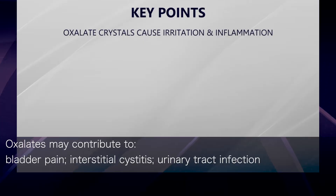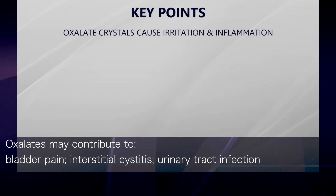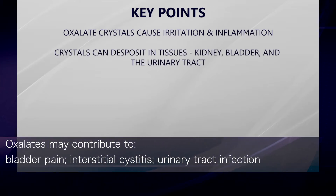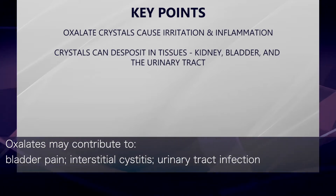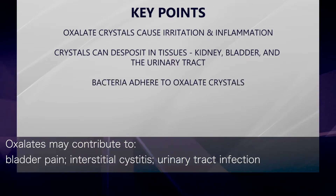Oxalate may contribute toward bladder pain and interstitial cystitis by causing local irritation and inflammation. They can adhere to tissue and essentially bind with epithelial cells, where they cause stress and potentially deplete local immunity. Oxalate can also act as a house for certain bacteria, including E. coli.